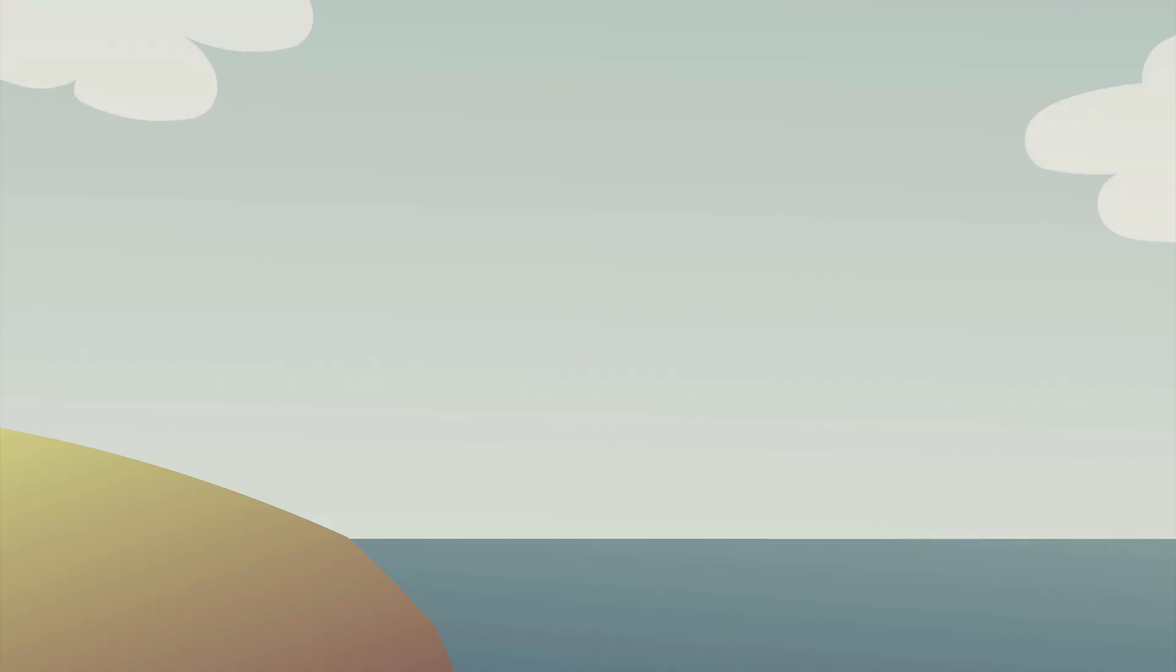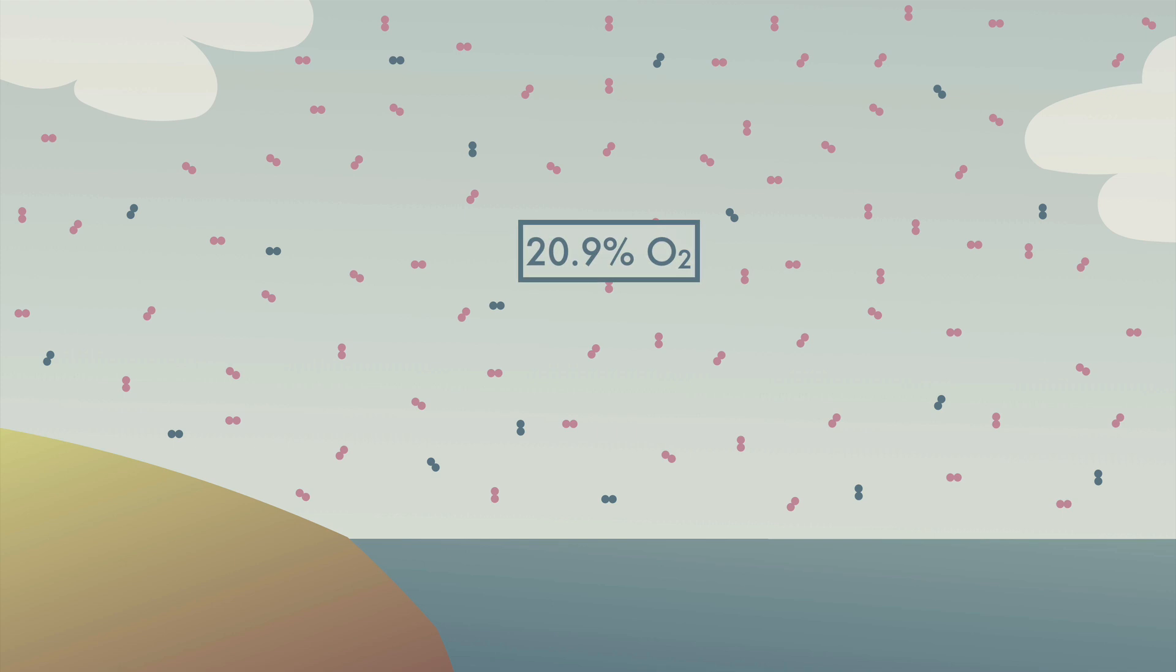Most of Earth's atmosphere is nitrogen gas, 780,840 parts per million, or about 78%. 209,500 parts per million are oxygen, about 20.9% of the atmosphere.